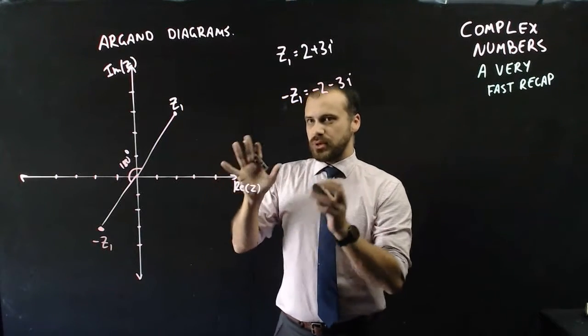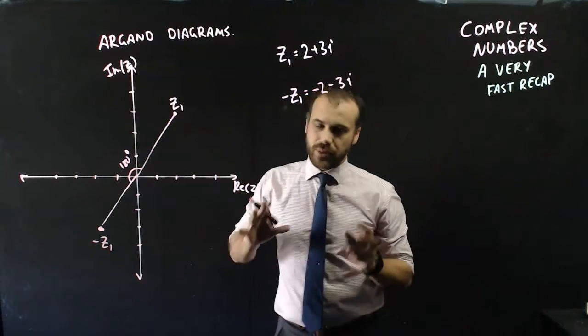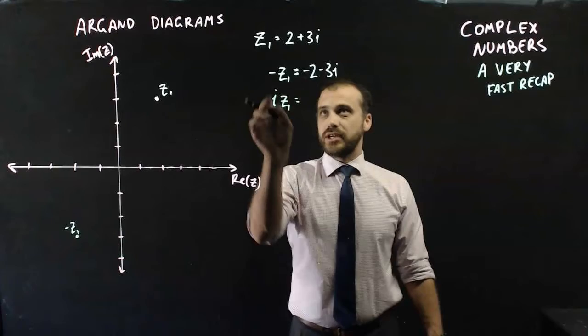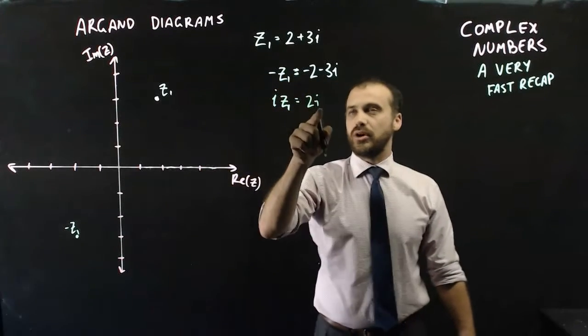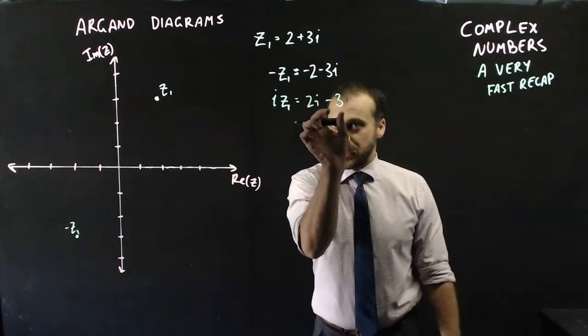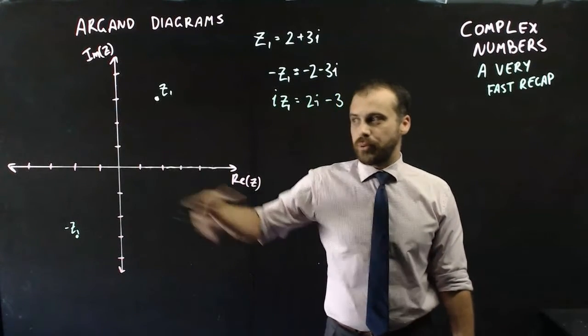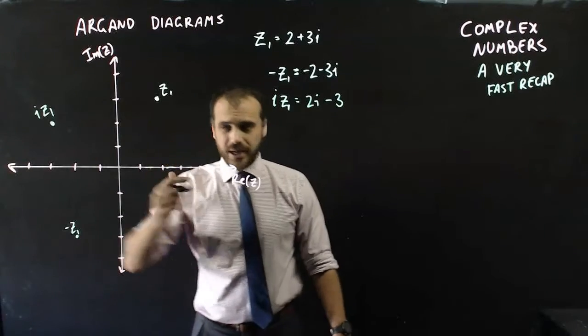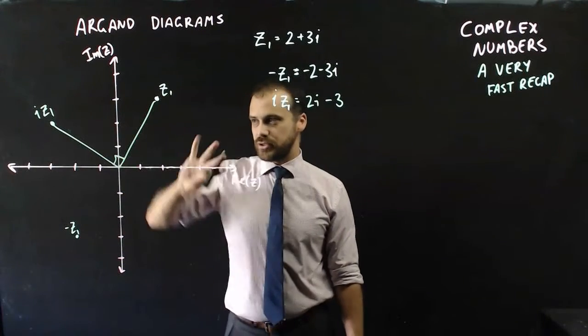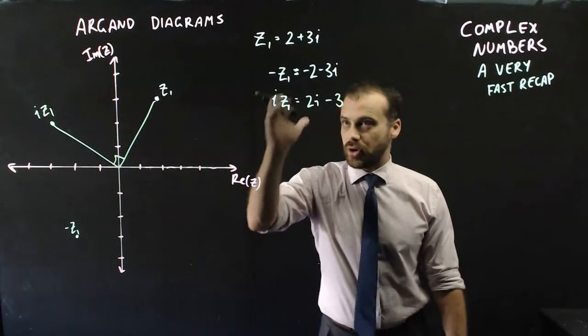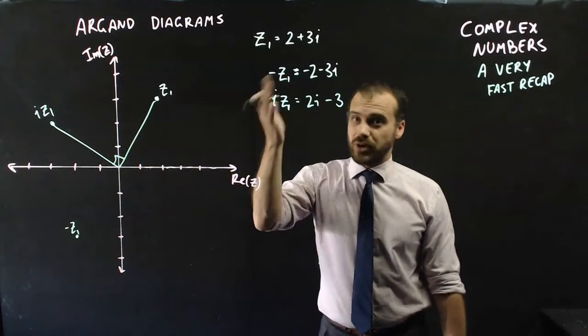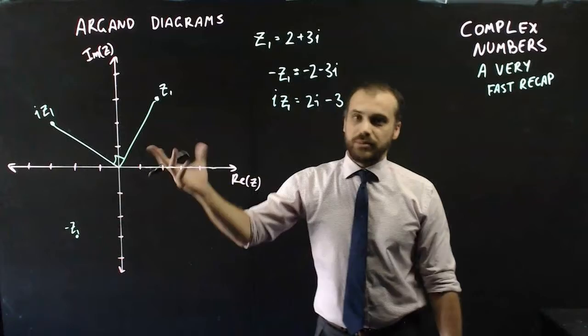But there are other things we can do as well to shift our complex number about the argand diagram. Taking z1 and multiplying it by i. Well, what that has the effect of doing is creating this as being 2i and making this negative 3. Now, that makes that the real component now and that the imaginary component. If I put it on here, it's a little bit hard to see, but what it's doing is rotating anti-clockwise 90 degrees. And if I were to multiply this thing by i, I'd also be rotating it another 90 degrees because multiplying it by i squared is the same as multiplying it by negative 1. So I'd end up there as well.